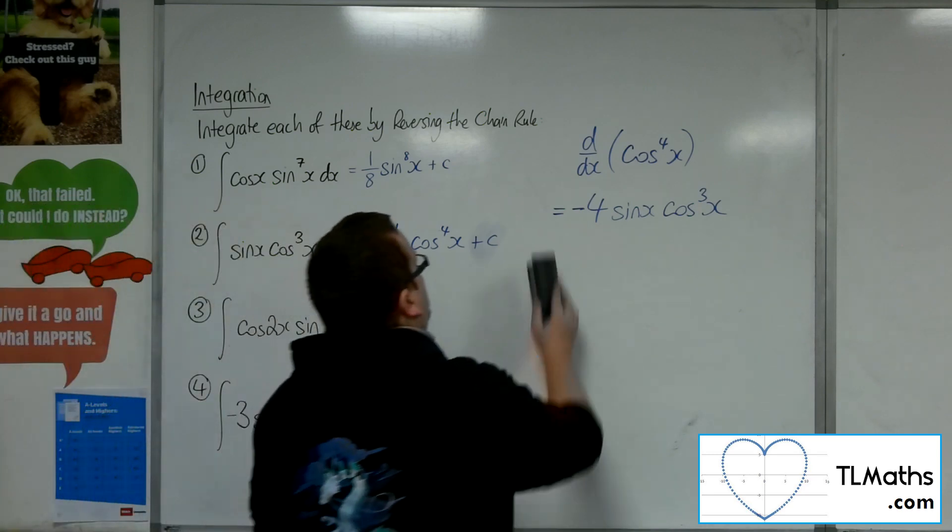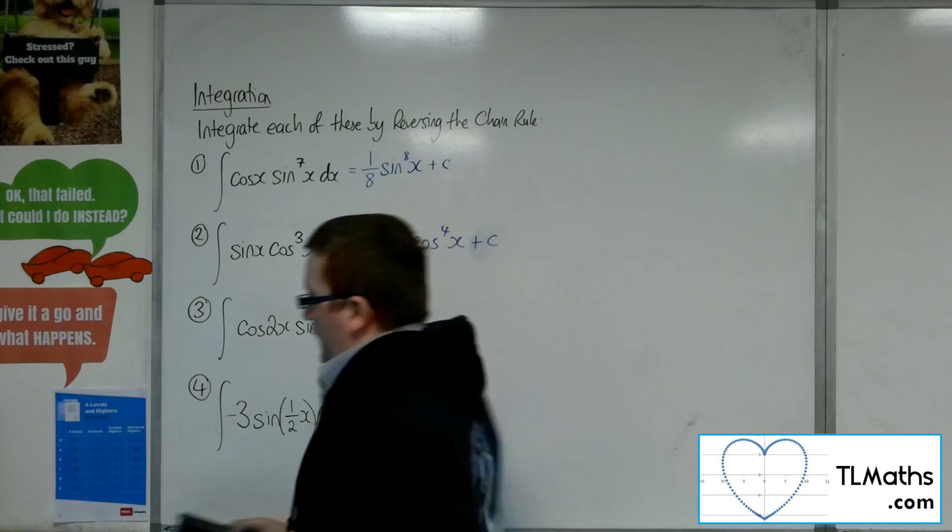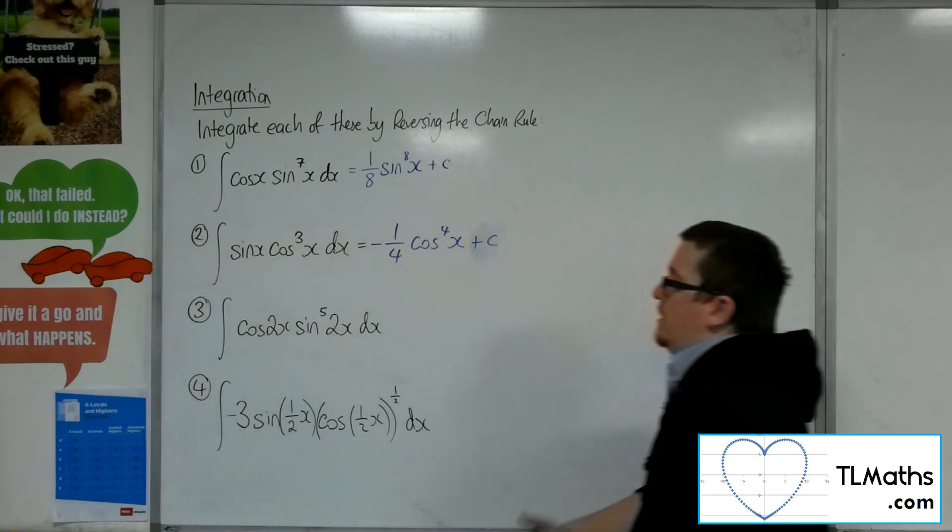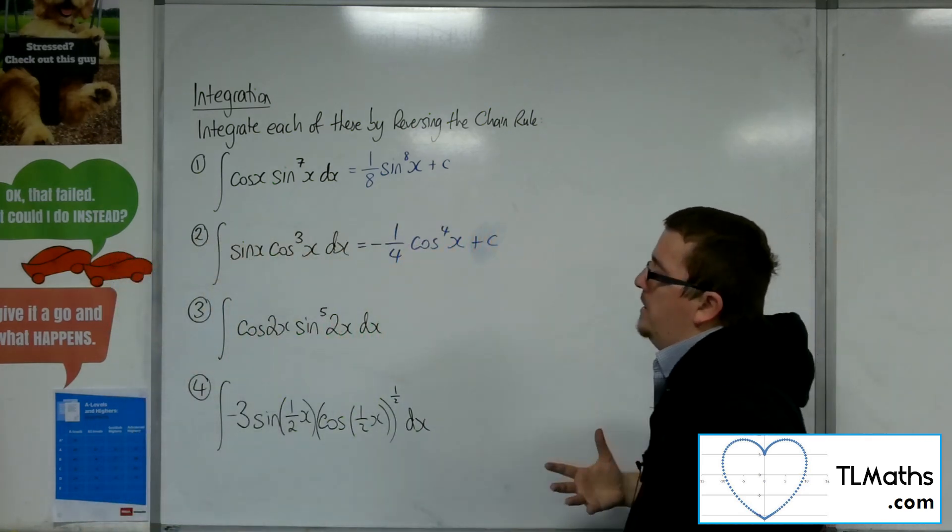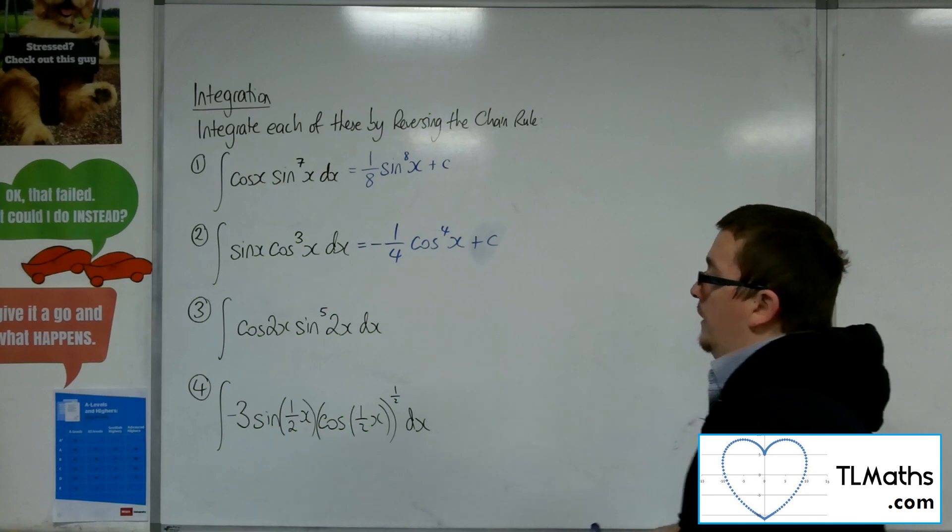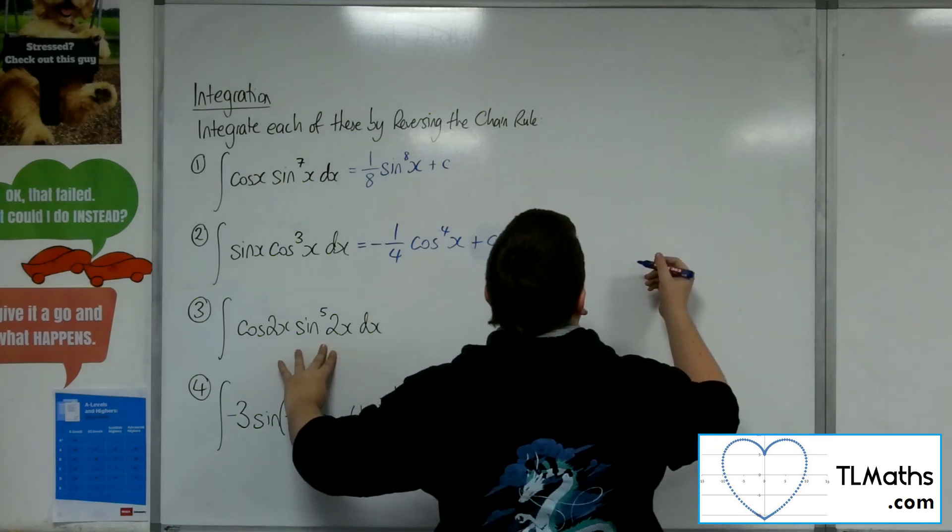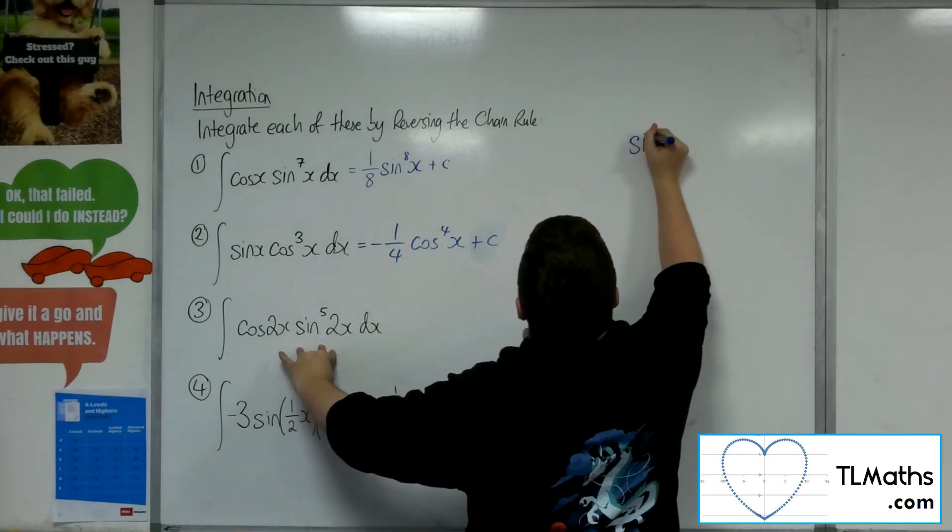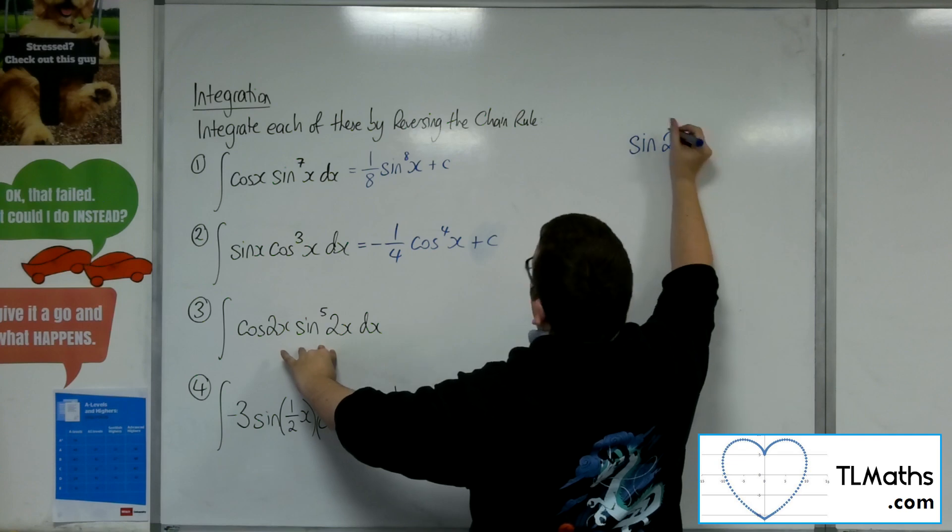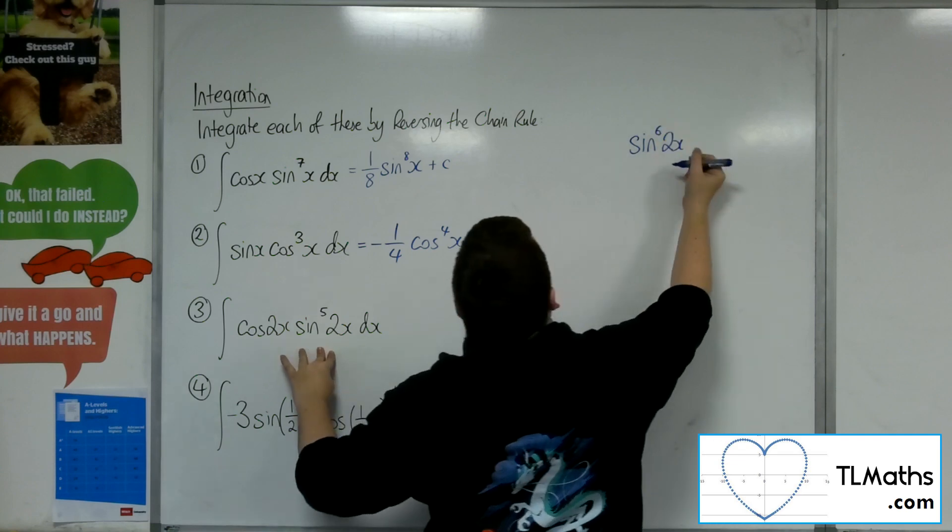Right. Number 3. OK, number 3. Cos 2x times sine to the 5, 2x. All right, so I would be expecting to get a sine 2x to the power of 6 there. OK?